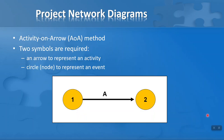To draw a project network diagram, we'll use the activity-on-arrow method, AOA for short. Only two symbols are required: an arrow to represent an activity — which is why we call it the activity-on-arrow method — and a circle, or node, to represent an event. There are two types of events: node number one represents the start of an activity, and node number two indicates the end of that activity. So there are only these two types of items needed to draw a project network diagram.